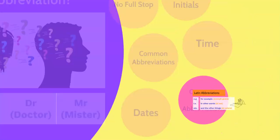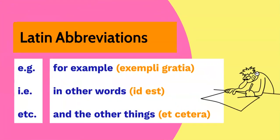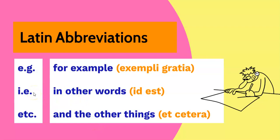Continuing with abbreviations that come from Latin, here are three well-known ones: e.g. for example, i.e. in other words, and etc. meaning and the other things. I would recommend not using these abbreviations because in formal writing, such as writing English essays, it's better to write these words in full.